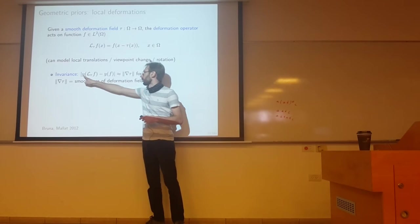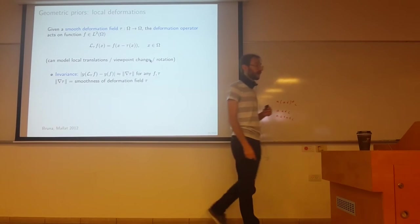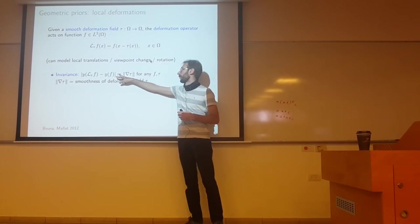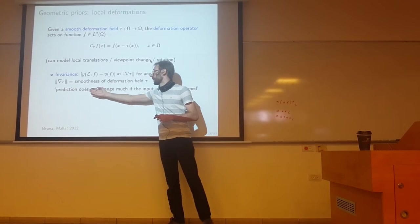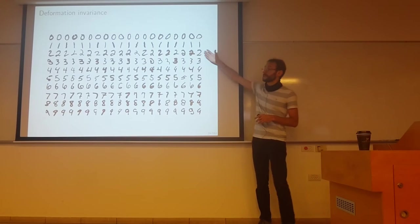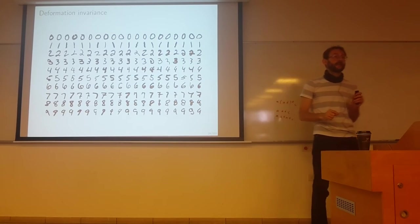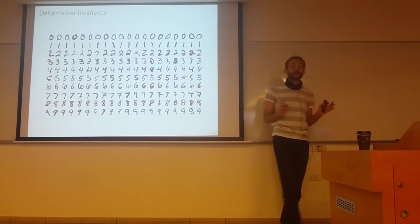The invariance in this case can be interpreted like this: if we apply y to the deformed version of f and compare it to y of the original f, we usually won't get the same thing, but I want it to be bounded. I want this difference to be somehow related to the norm of the gradient of the field tau, which is a kind of smoothness criterion of the deformation. The prediction or label will not change much if the input is slightly deformed. Think of the famous MNIST digits - if I make digit 2, everybody will write them slightly differently. The same person writing the same digit several times will produce different results. If I deform slightly the input, I don't want my classification to change.